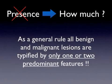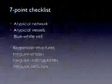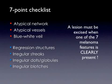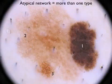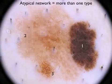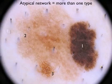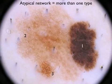As a general rule, all benign and malignant lesions are typified by only one or two predominant features. The melanoma criteria summarized by the seven-point checklist are still valid, but the general rule is that a lesion must be excised when just one of the seven features is clearly present within the lesion. The first and most important melanoma-specific criterion is the atypical network, defined as the presence of more than one type of network within the lesion. This is a melanoma in situ, typified by one dermoscopic feature, namely network.